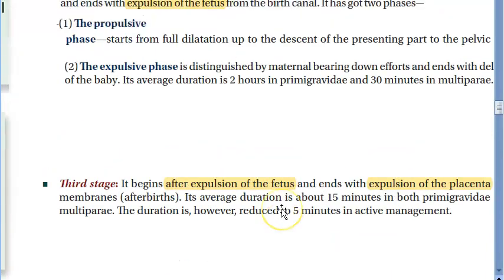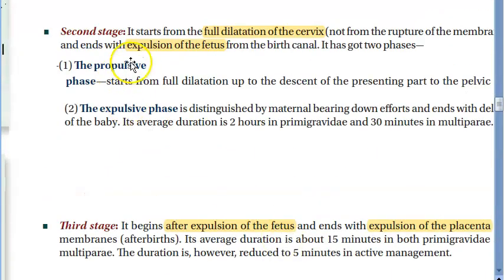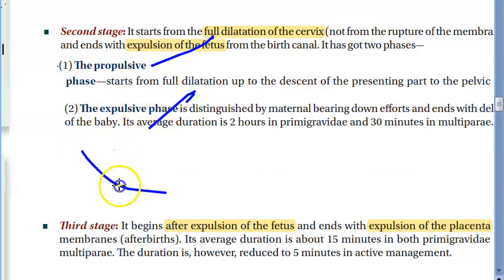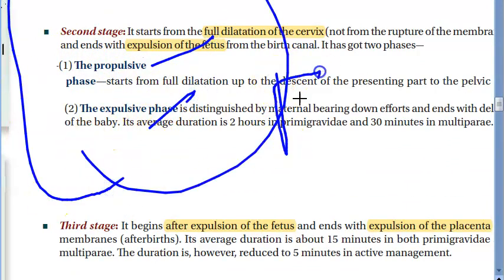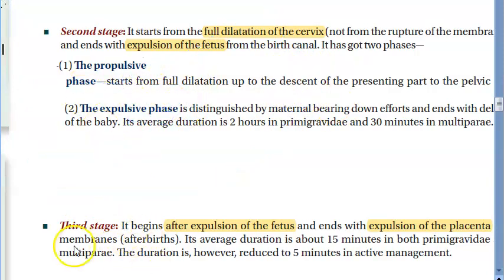Second stage of labor has two phases: propulsive phase and expulsive phase — what is coming out here is the fetus. We will cover all that in detail for each stage.